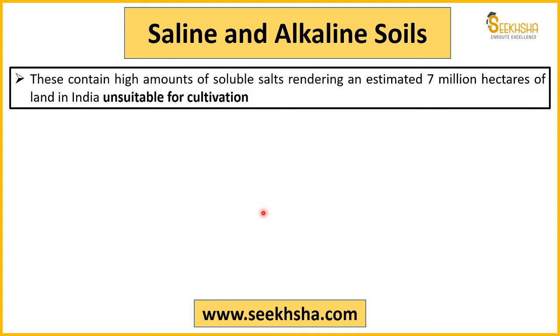Saline and alkaline soils have a high amount of soluble salts. In India, around 7 million hectares of land is saline and alkaline, which is considered completely unsuitable for cultivation.